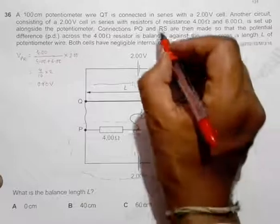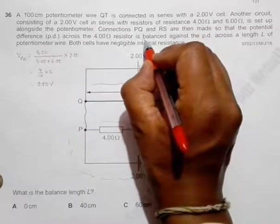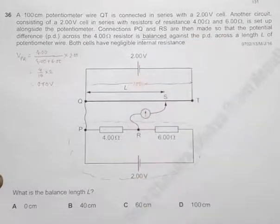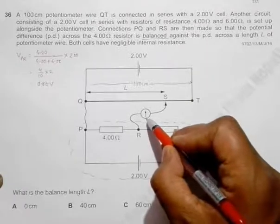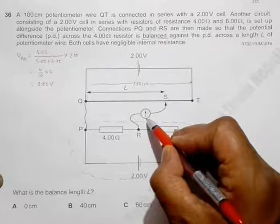Now since we have the word called as balanced, since there's a balance, the current that is recorded by this meter should be zero.